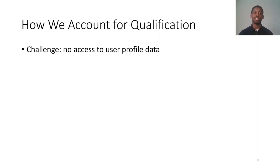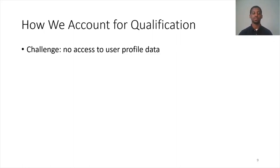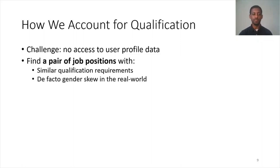The crux of our methodology is how we account for qualification. The challenge is that as external auditors, we don't have access to user profile data that would let us directly control for qualification in our audience. So instead, we rely on an indirect approach. What we do is find a pair of job positions meeting two criteria: first, they need to have similar qualification requirements; and second, there needs to be data showing a de facto gender skew in the real world for these job positions.